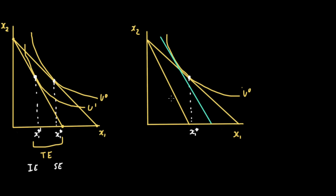This new parallel line shows the new price ratio and where it is tangent to the old indifference curve, giving a new optimal quantity without the consumer's real purchasing power changing. If the consumer could stay on the same indifference curve, he would consume x1 prime instead of x1 star. This change is the substitution effect. The income effect is the total effect minus the substitution effect.